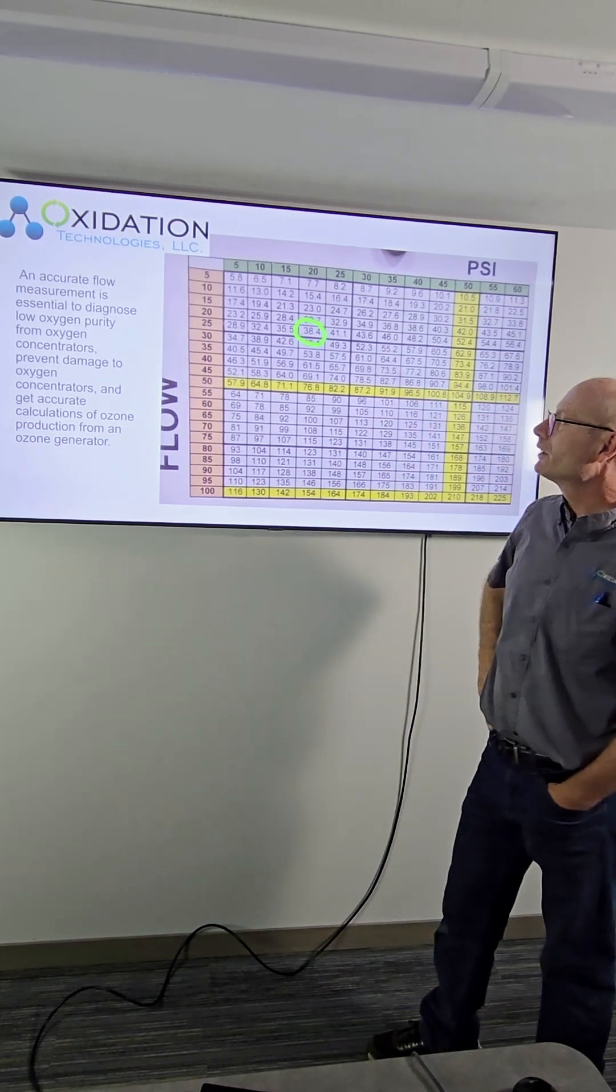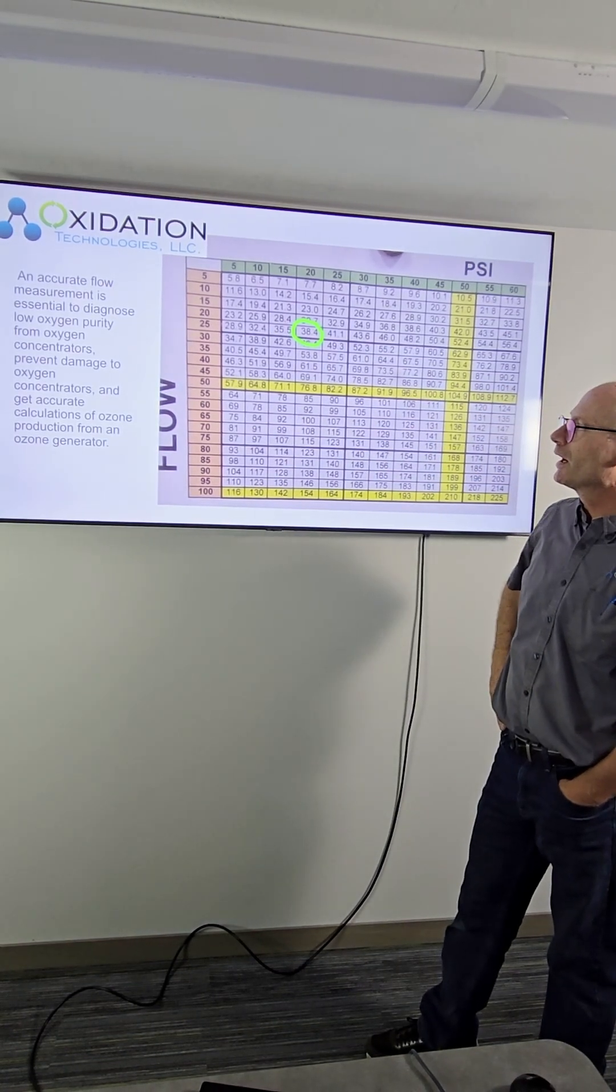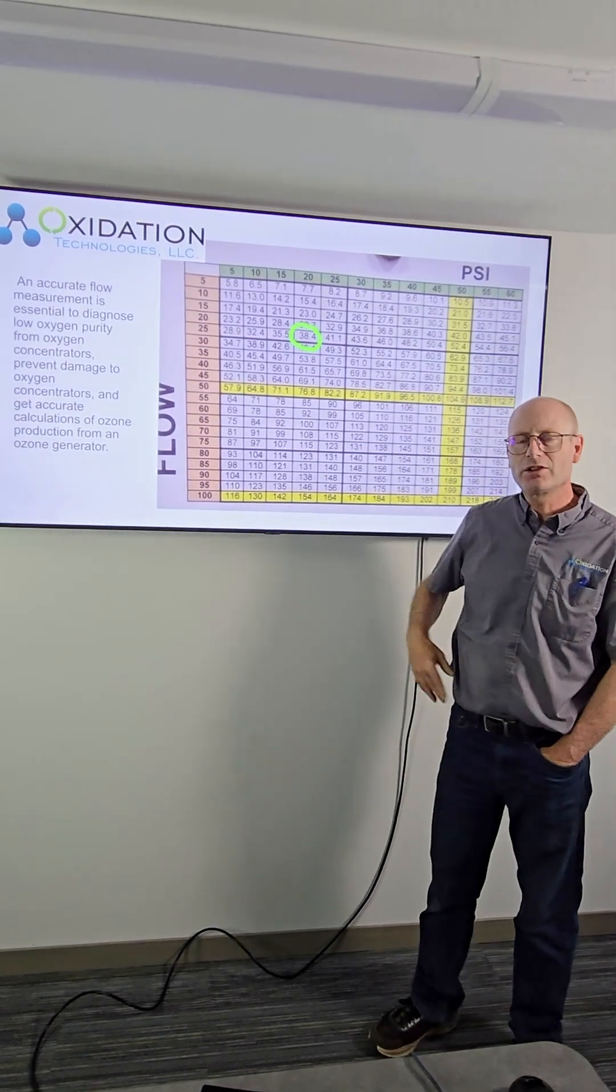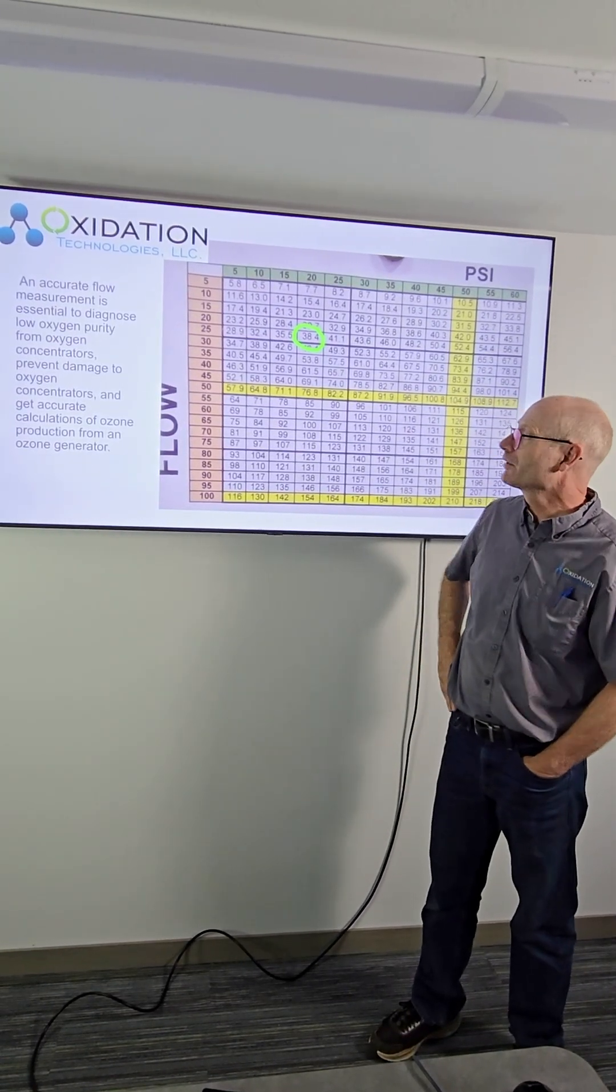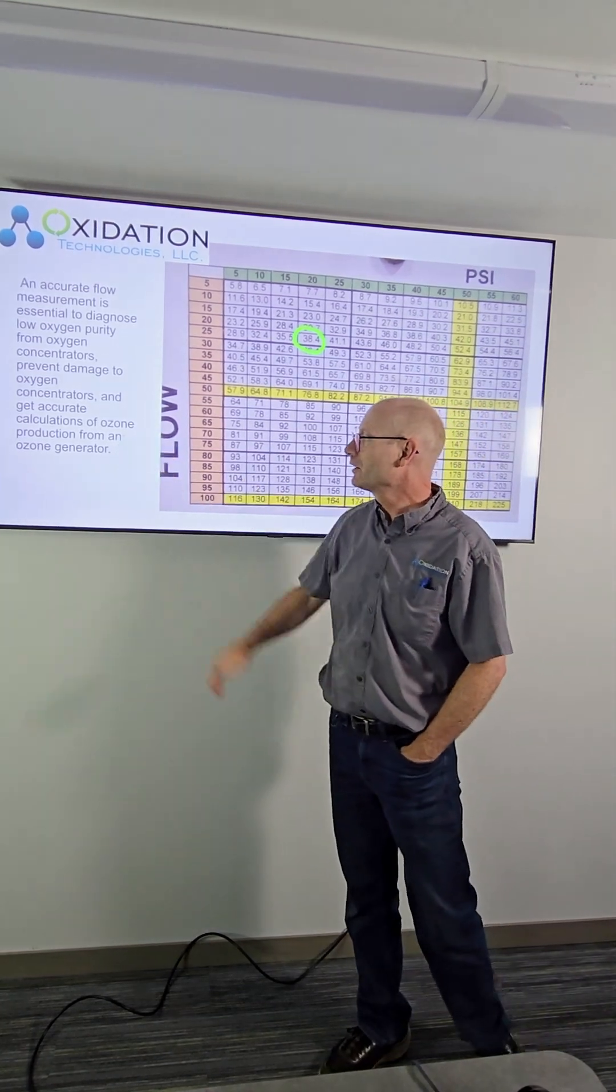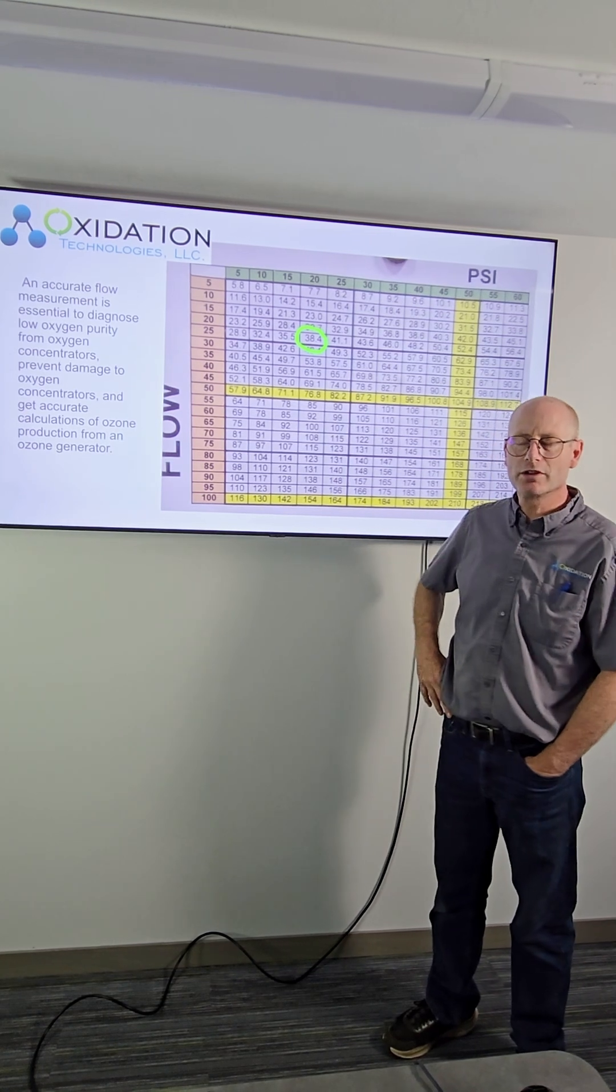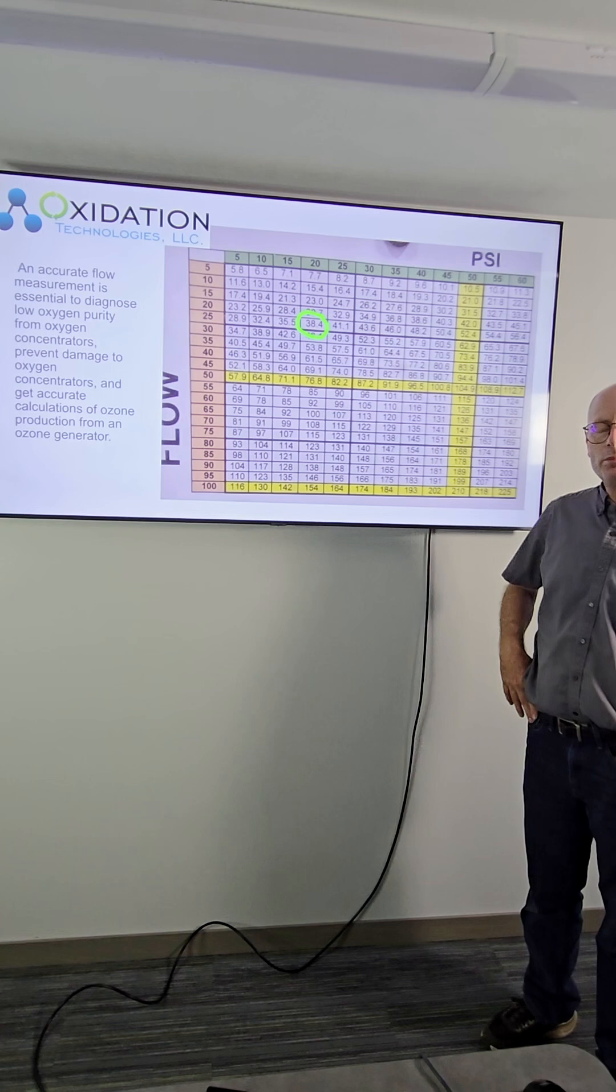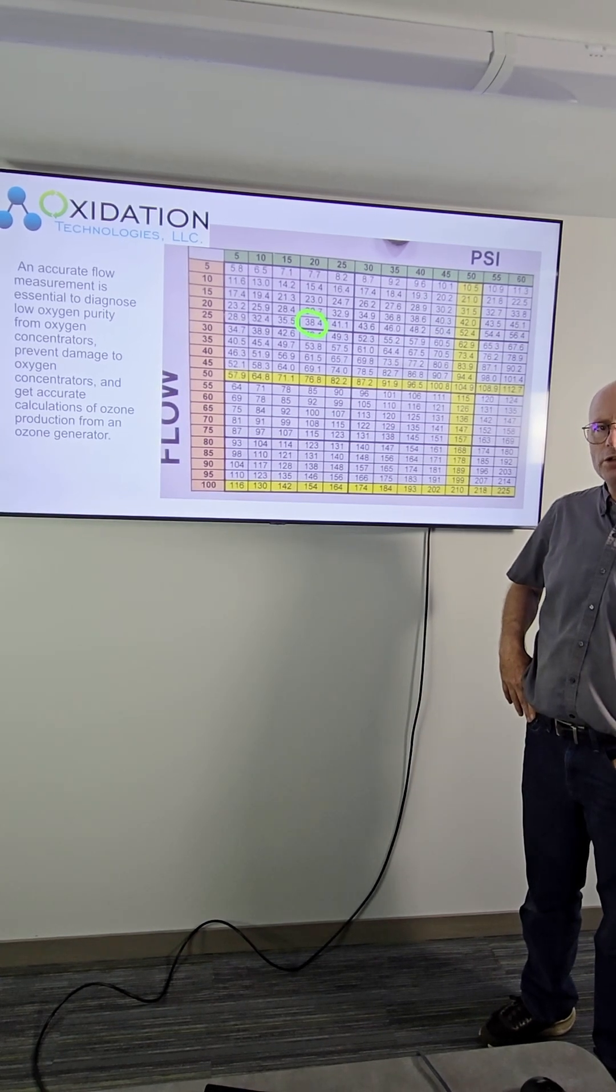And it is important and accurate flow is essential to diagnose low oxygen purity from oxygen concentrators. If they're exceeding their flow limit it can damage the concentrators and to get accurate calculations of ozone production from an ozone generator it's important to know exactly what the flow is and be able to calculate and use a flow meter properly to get a correct measurement.